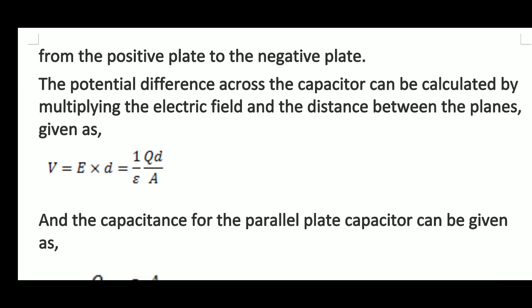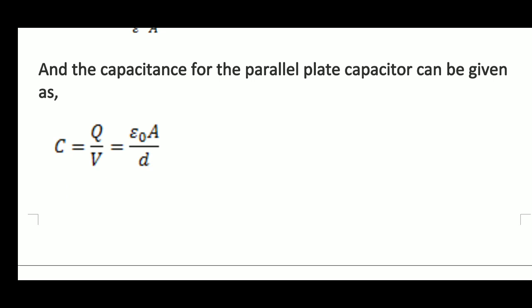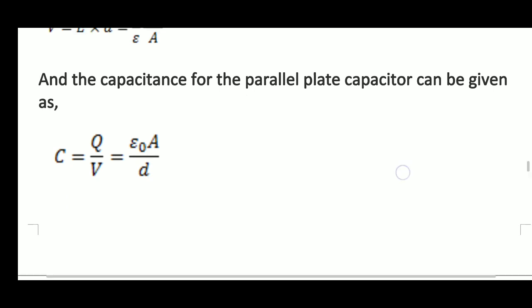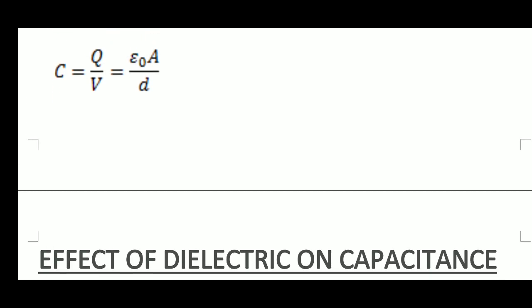The potential difference across the capacitor can be calculated by multiplying the electric field and the distance between the plates: V equals E times d, which is 1 upon epsilon nought times Q times d upon A. The capacitance for the parallel plate capacitor is thus C equals Q by V, giving C equals epsilon nought A by D. We can see that capacitance depends only on the permittivity epsilon nought, the area A, and the distance D, and does not depend on Q or V.